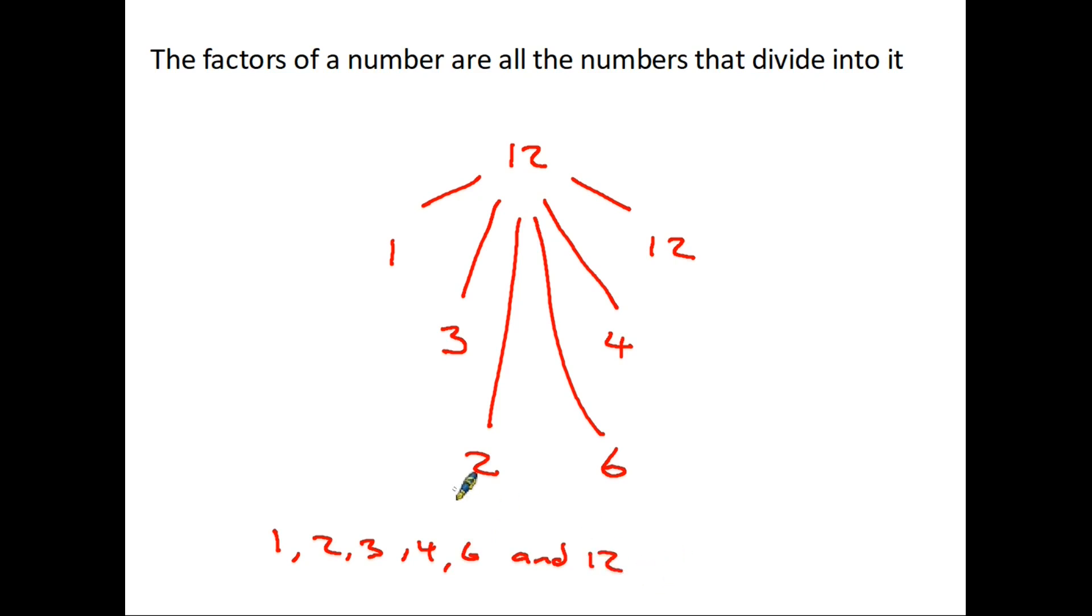You may notice that in most cases, and we'll have a look at a situation where it's a little bit different in a moment, in most cases factors are found in pairs. 1 times 12, 3 times 4, 2 times 6 all make up 12. So once you've found one you can usually find the other.